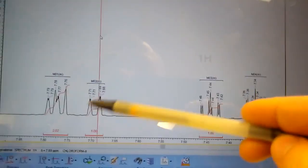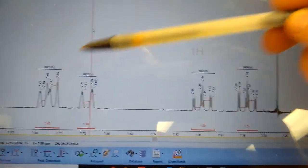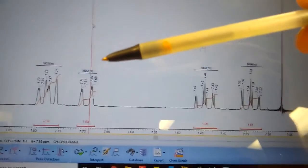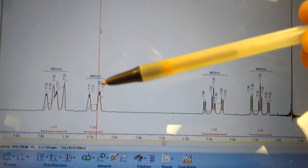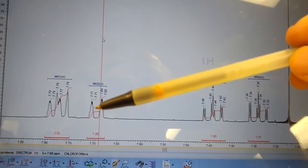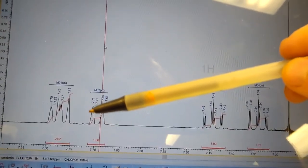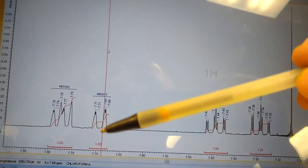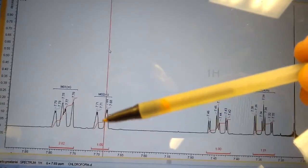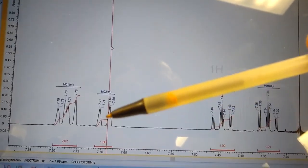Regarding splitting or multiplicity when talking about these signals, some of them are easy to tell. Like this would be a doublet where you've got two kind of equal intensity signals. We'll talk about why this splits in a minute. So that signal would be a one H doublet.